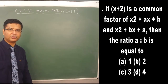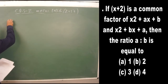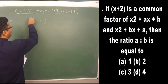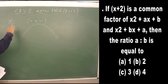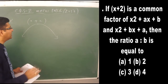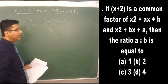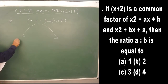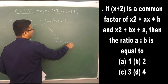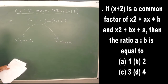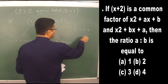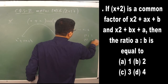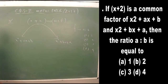Next, we take a question from the HCF section. It is given that x + 2 is a common factor of two quadratic polynomials, meaning x + 2 is the HCF. The two quadratic polynomials are x² + ax + b and x² + bx + a. We need to find the ratio a : b, with options 1, 2, 3, and 4.